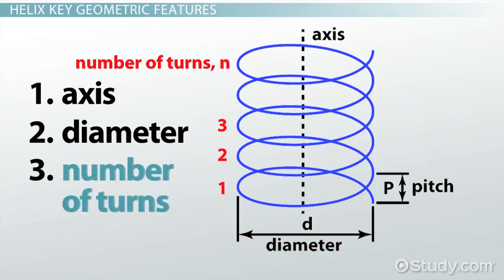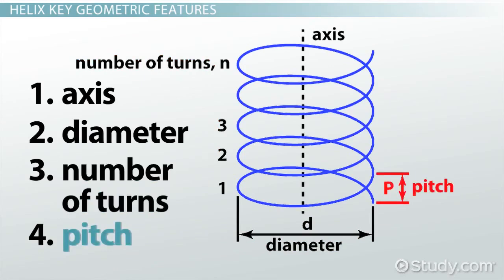3. Number of turns. This is the count of how many turns the helix has. 4. Pitch. This is the distance between any two points on the helix that are exactly one turn apart, measured parallel to the axis.